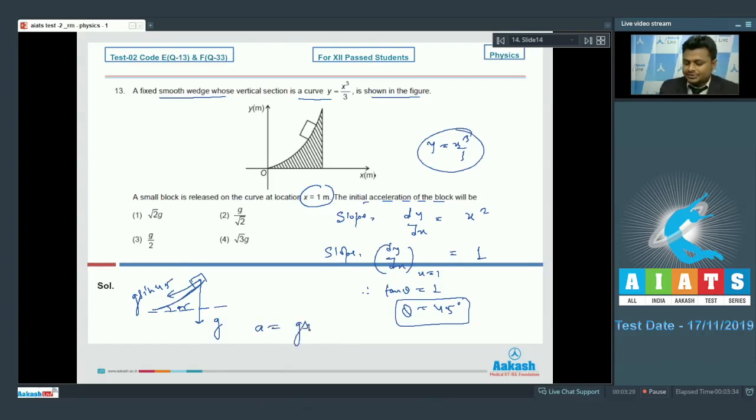It means it will slide along this line with g sine 45. So acceleration a will be simply g sine 45 or g upon root 2 meter per second square. Option number 2 we can go with which is absolutely correct.